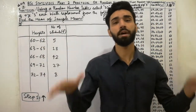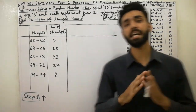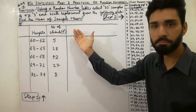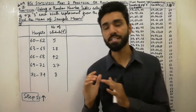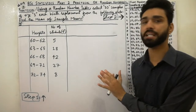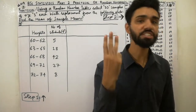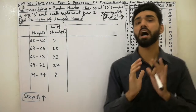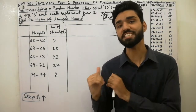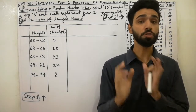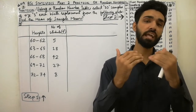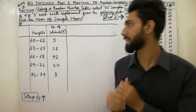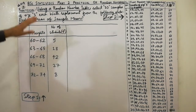Assalamu alaikum dear friends. Today I am here to explain how to solve a practical in which we will find the mean of sample means by using a random number table. This video is very interesting. I will solve the practical with the easiest and most conceptual method using three steps. Each step is very important, so don't skip any step. If you want more practicals, you can watch the description below the video where I have sent links to other practicals. Let's start the lecture.